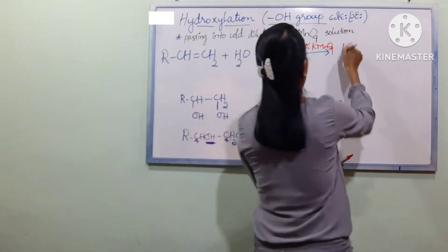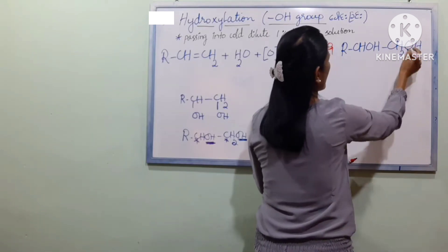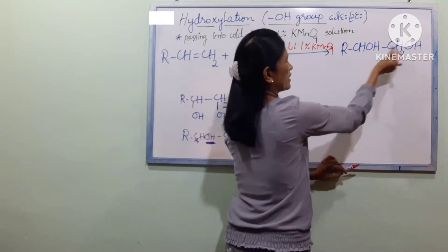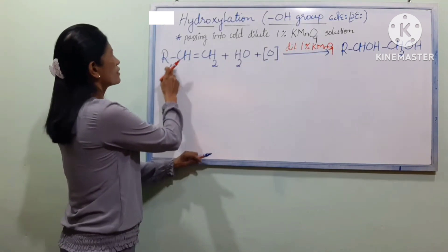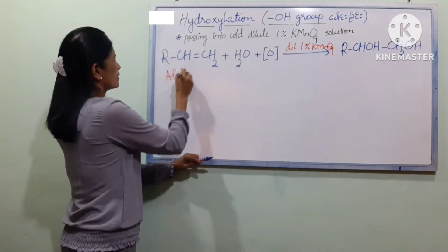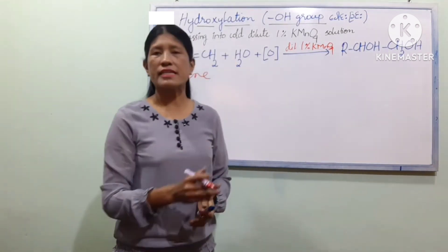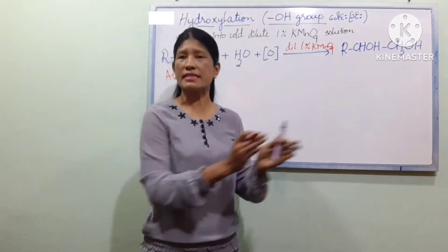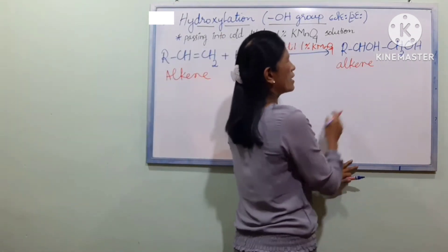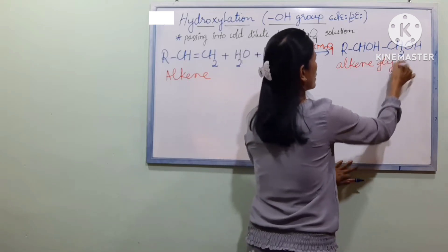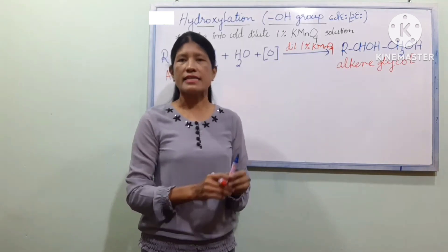The next product is R-CHOH-CH2OH. This OH is the one that we use. The alkene reacts and we can use OH to form glycol — R-CHOH to form the glycol product.